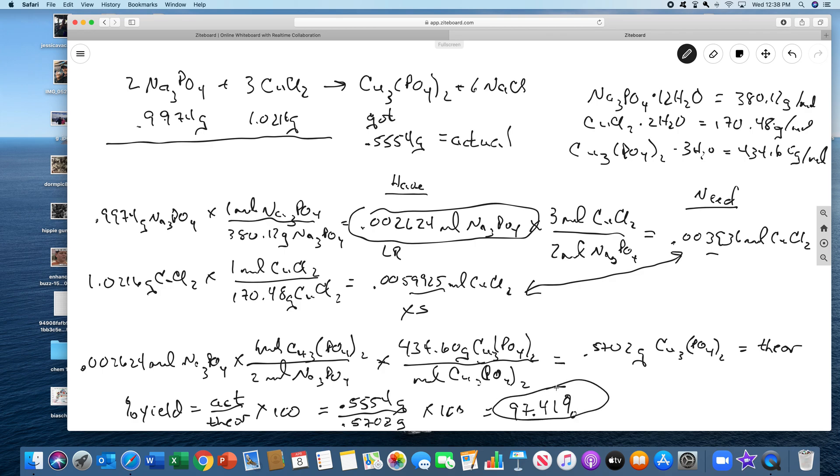This is part A of the lab. We're going to give you these two numbers for starting amounts of sodium phosphate and copper chloride, and we're going to give you the actual yield from the experiment because you guys can't actually do it. You can go back and forth and use this video as reference. Stay tuned for part B.